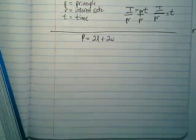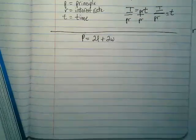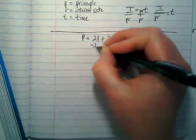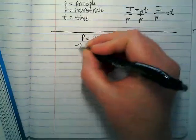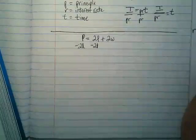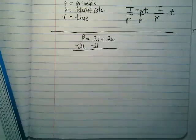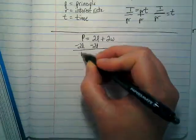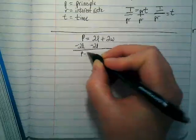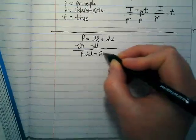First thing I want to do is subtract the 2L. If I'm trying to get this to be for the width, I want to get everything away from the W. And we start with the term that is not connected to it. So now we have perimeter minus 2L is equal to 2W.